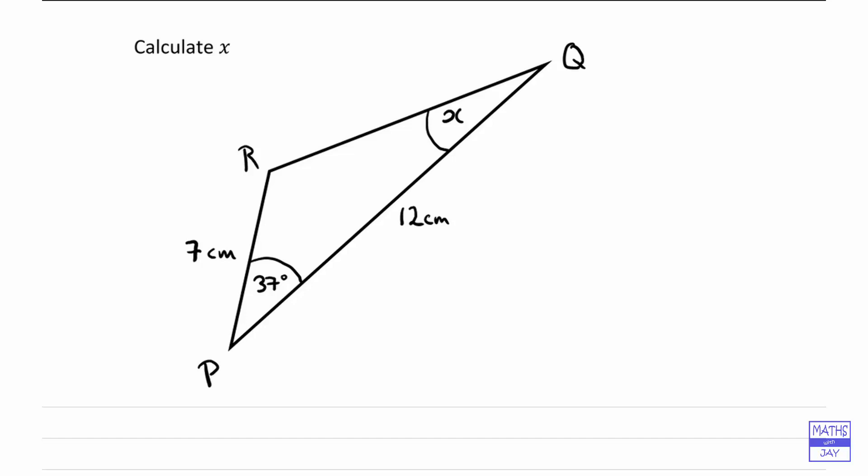Here we've got a triangle that's not a right angle triangle, not an isosceles triangle, so we're going to need to use the sine rule or the cosine rule or both of them.